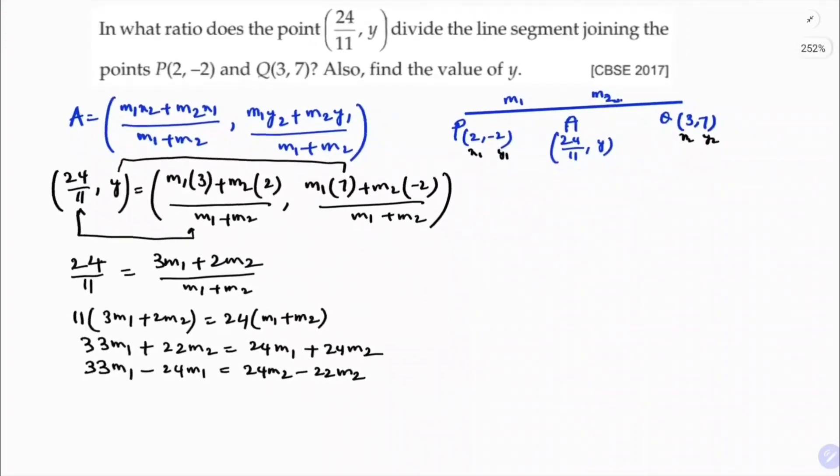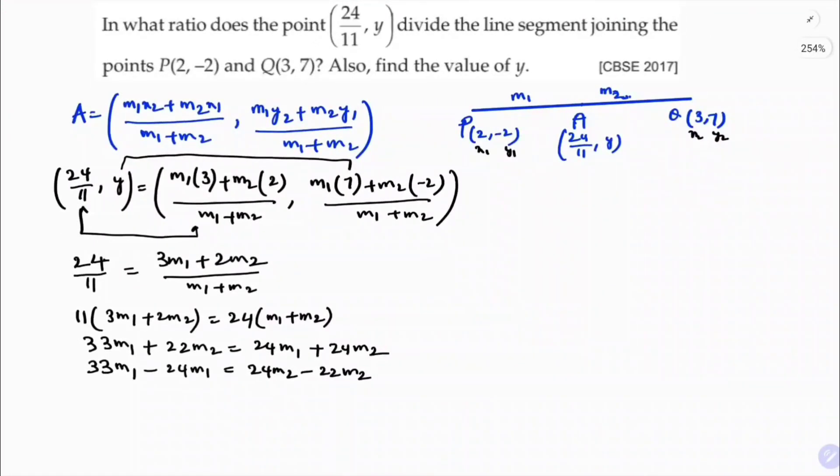So here, 33 minus 24 is 9m1 equals 24 minus 22 is 2m2. So m1 by m2 is 2 by 9. So m1 is 2, m2 is 9. See here you got the ratio, that is 2 is to 9.